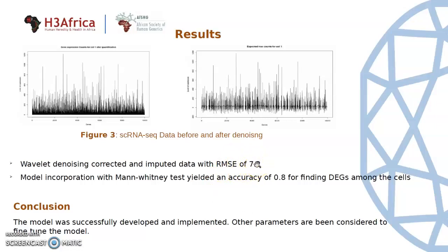We then incorporated the model with the Mann-Whitney test, which yielded an accuracy of 0.8 for finding the differential gene expression among the cells.